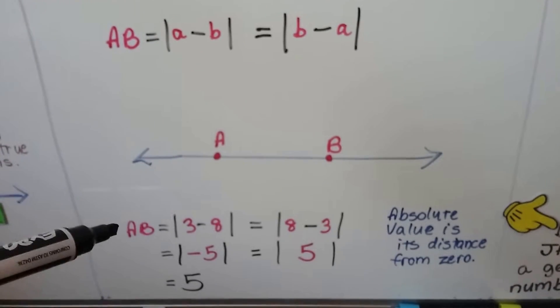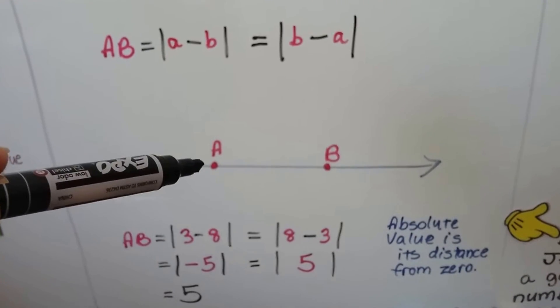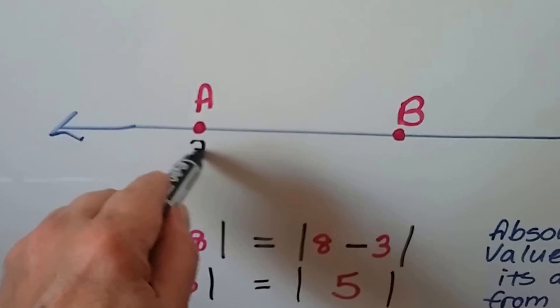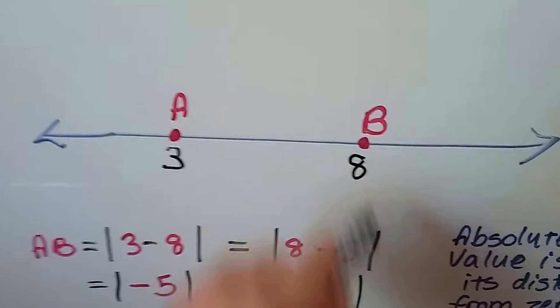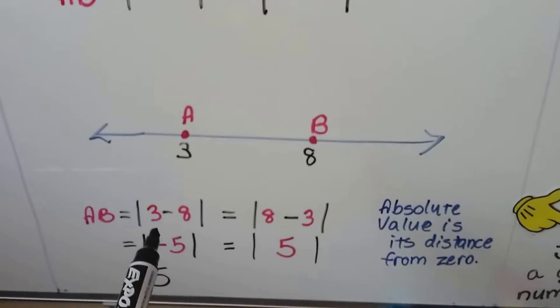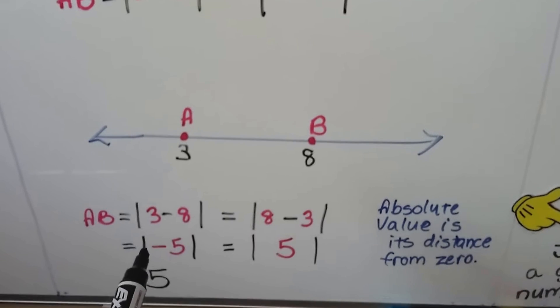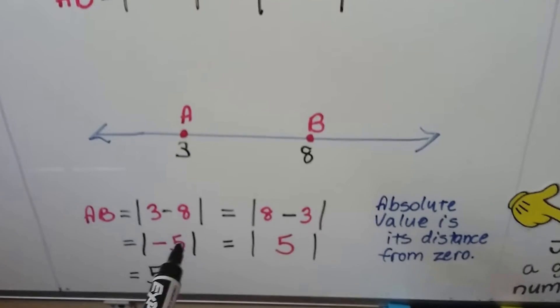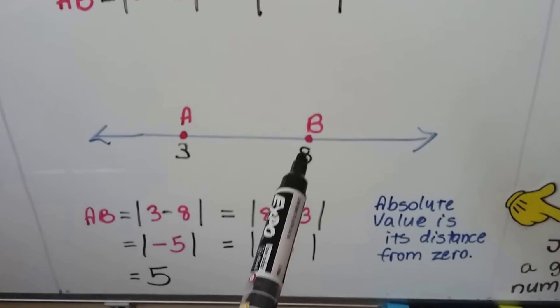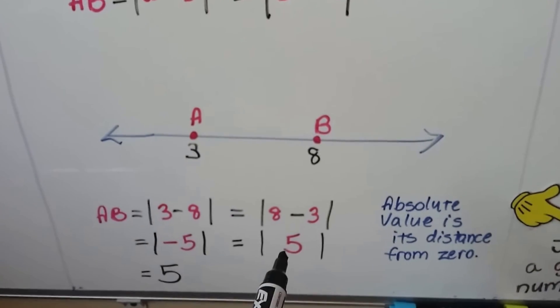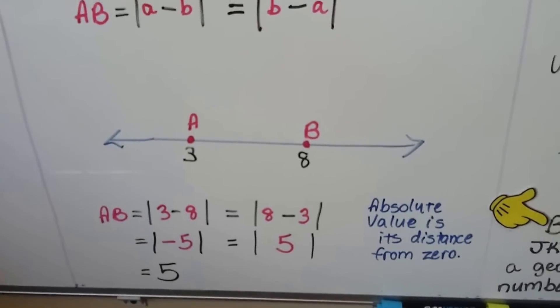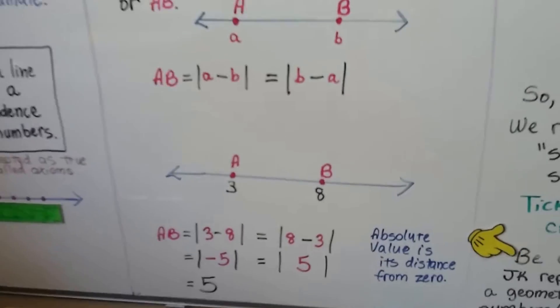So if AB equals 3 minus 8, what if on a ruler this was a 3 and this was an 8? To find the distance here, we can do the absolute value of 3 minus 8, which is negative 5. The absolute value of negative 5 is 5, positive 5. We can also say it's 8 minus 3, which is the absolute value of 5, which is 5. Remember, the absolute value is its distance from 0.